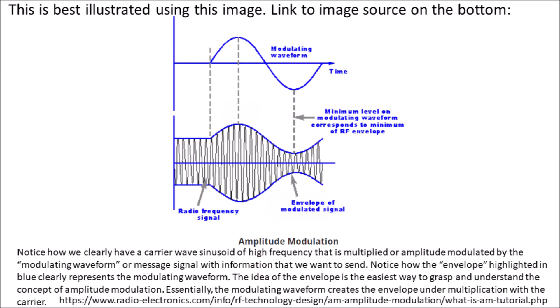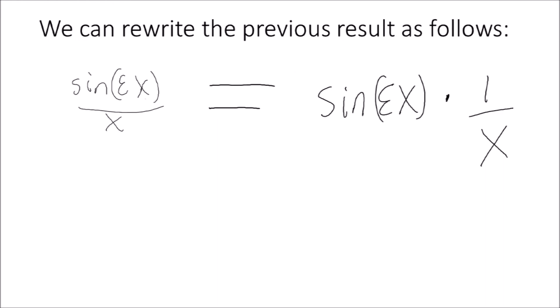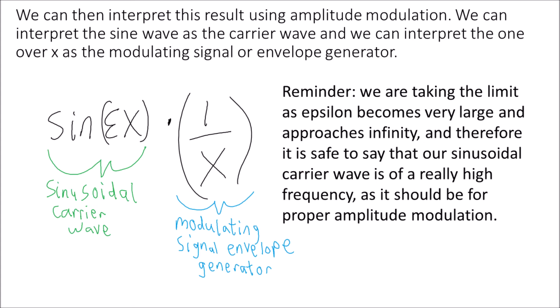This is best illustrated using this image. Notice how we clearly have a carrier wave sinusoid of high frequency that is multiplied or amplitude modulated by the modulating waveform or message signal. The envelope highlighted in blue clearly represents the modulating waveform — the modulating waveform creates the envelope under multiplication with the carrier. Similarly, the transformed sinc function can be viewed with the perspective of amplitude modulation. We can rewrite the previous result and interpret the sine wave as the carrier wave and the 1/x as the modulating signal or envelope generator.